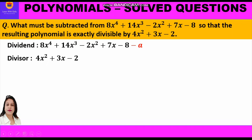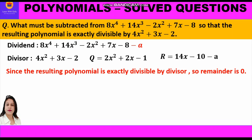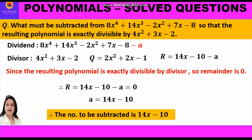We were given the dividend and divisor, and by long division we found the quotient and remainder. The question says subtracting a from the dividend makes the resulting polynomial exactly divisible by the divisor — meaning the remainder is 0. So we set 14x minus 10 minus a equals 0, and transposing a to the other side gives a equals 14x minus 10. This is the number which must be subtracted from the dividend so the resulting polynomial is exactly divisible by the divisor. The answer is 14x minus 10.